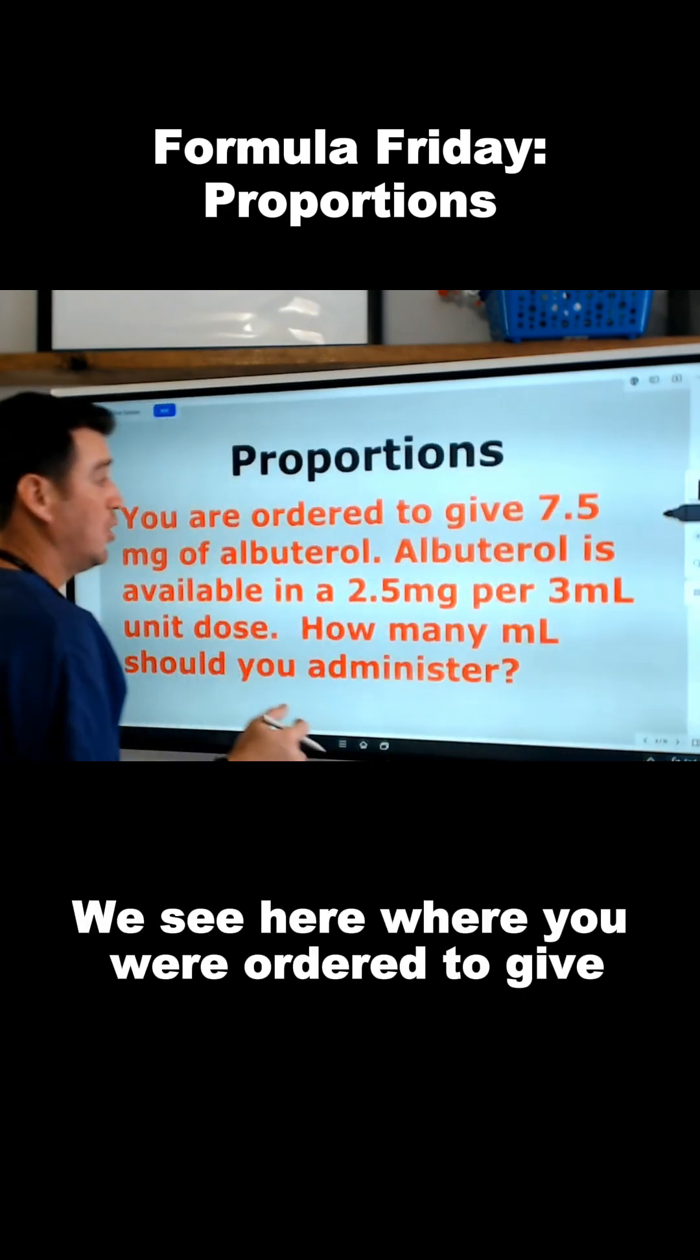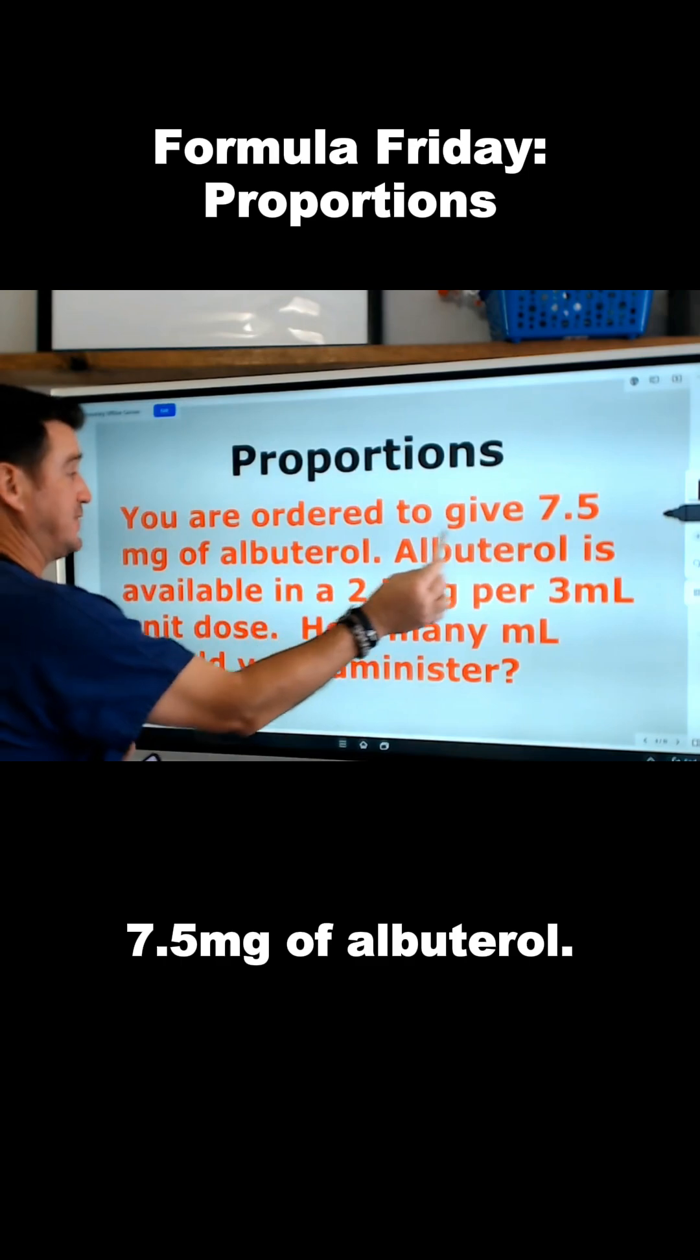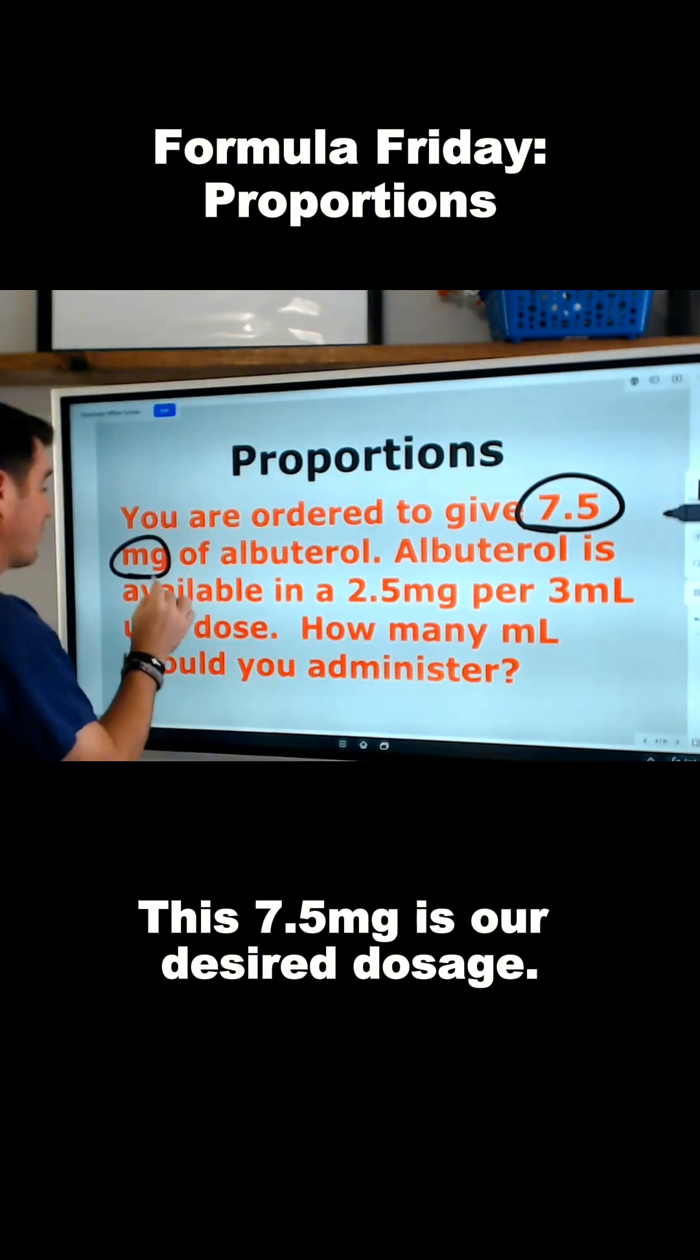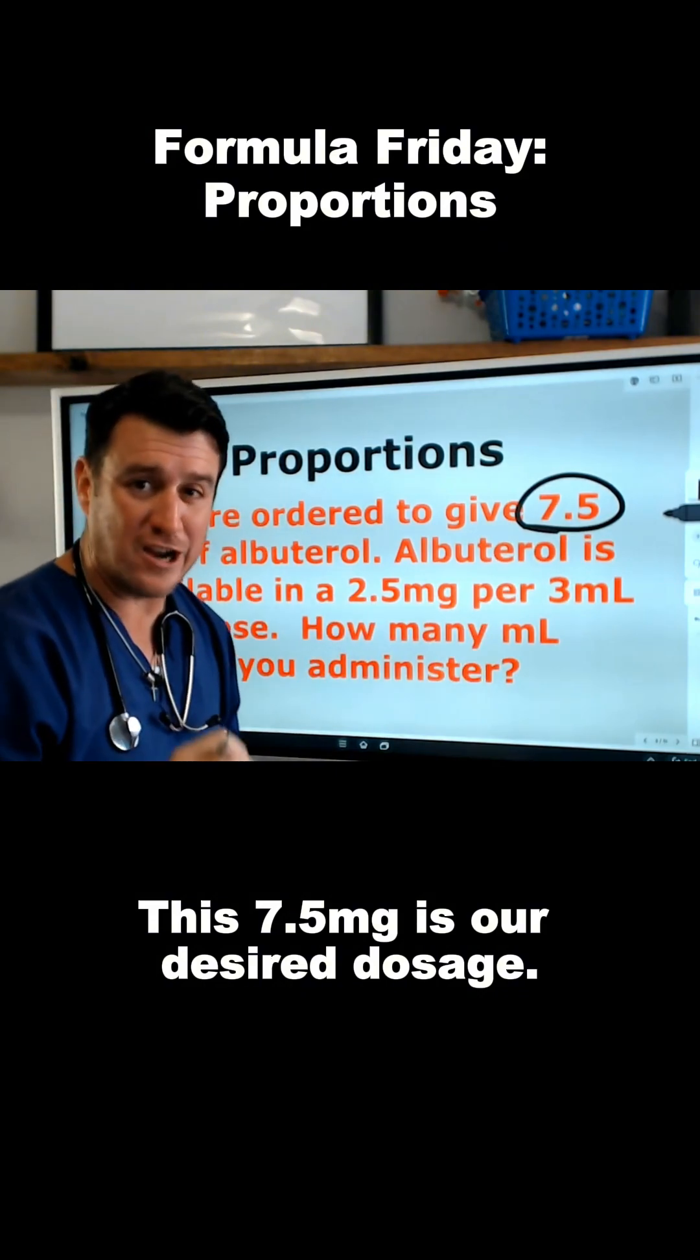We see here where you are ordered to give 7.5 milligrams of albuterol. This 7.5 milligrams is our desired dosage.